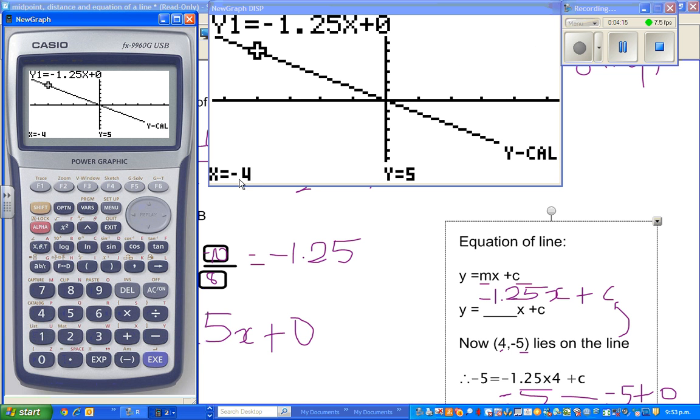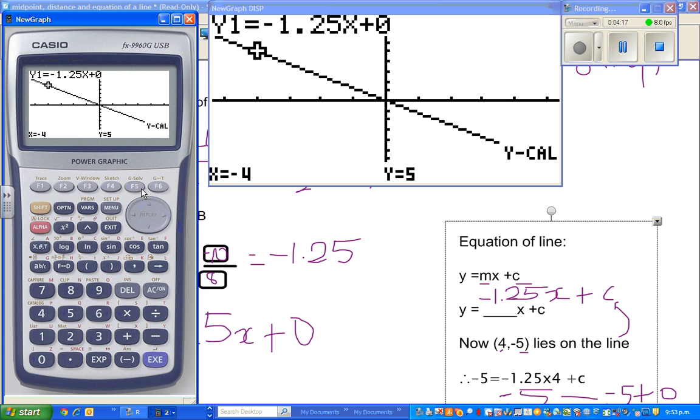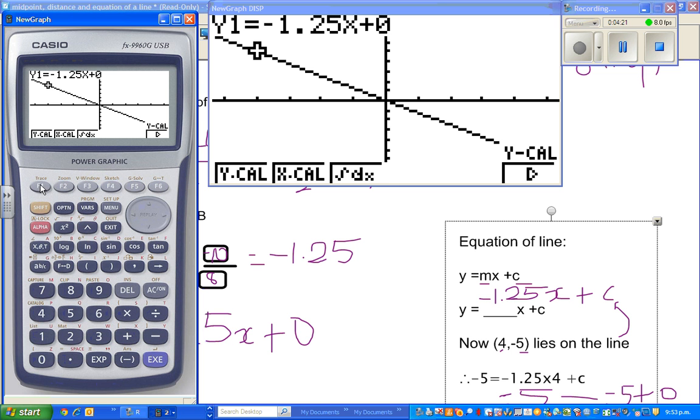When x is negative 4, y is 5. One more. And again, F6, y-calc.